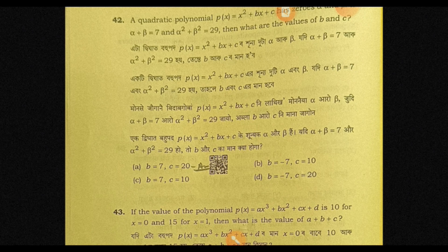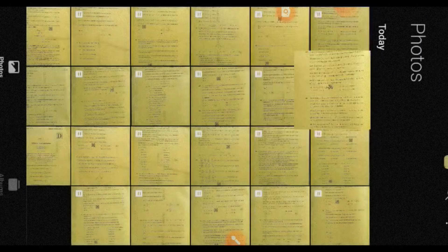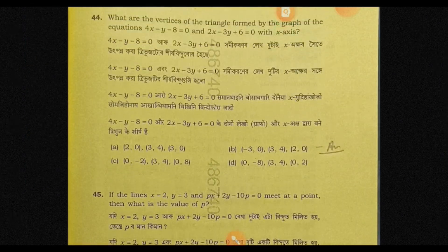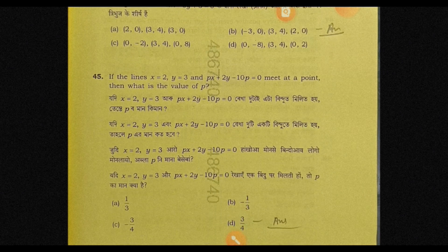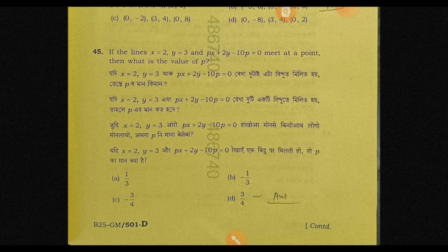Question 42 — B equals 7, C equals 10, answer C equals 5. Question 44, answer B — minus 3, 0, 3, 4, 2, 0. Question 45, answer D — 3, 4.